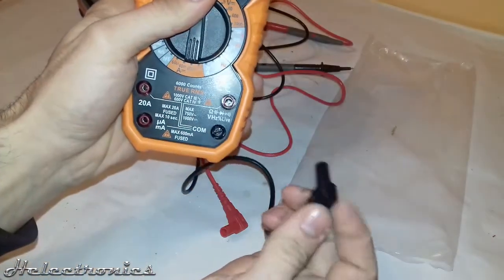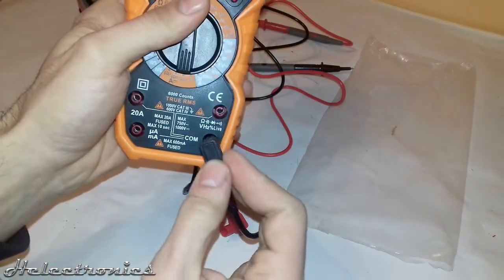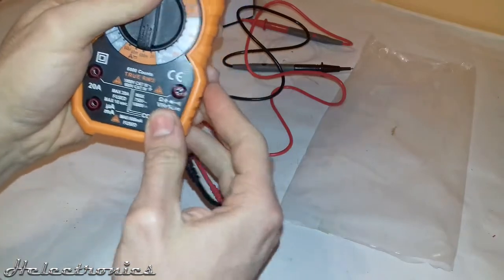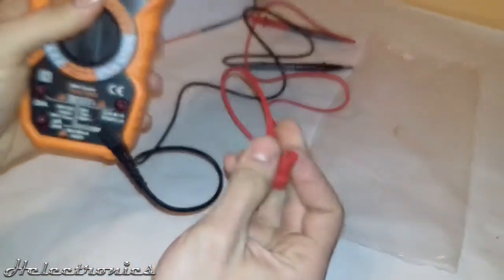I connect them to the multimeter. The black is the ground and it goes to the COM connector. The connection for the red one depends on what you want to measure.